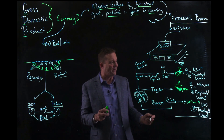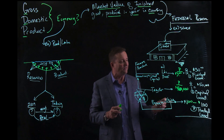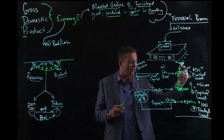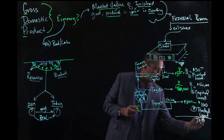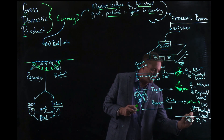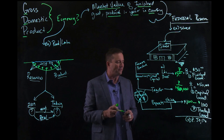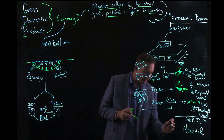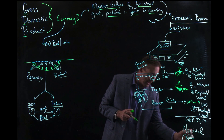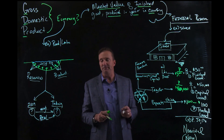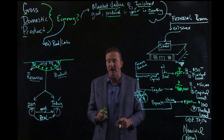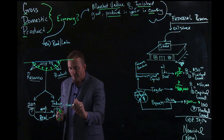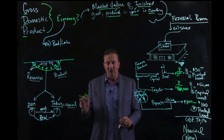Let's add all this up. I've got a $30 finished good, a $50,000 tractor, and a $100 export — that's $50,130 total GDP. This is a special type of GDP called nominal GDP. If you want to think of it as a word, it is the now GDP — the today term back on our pond.